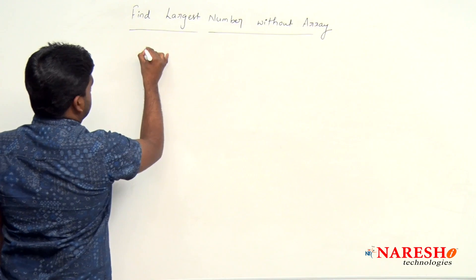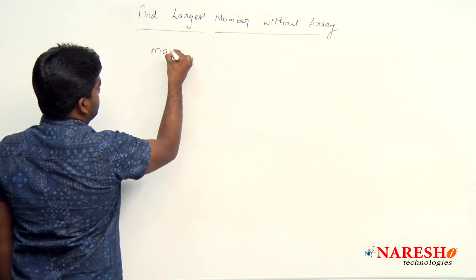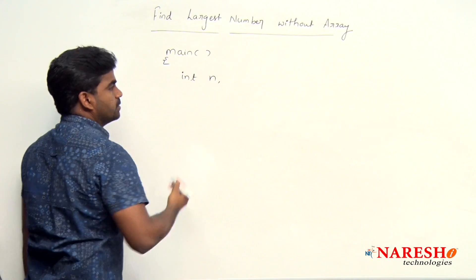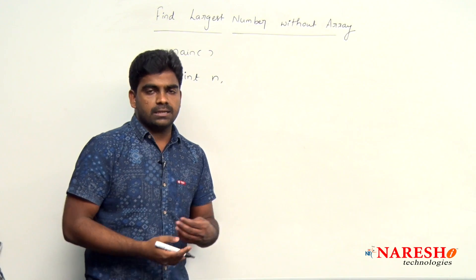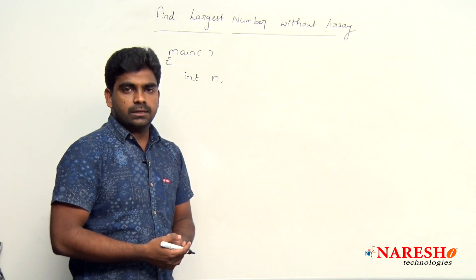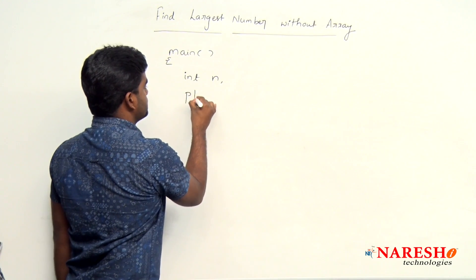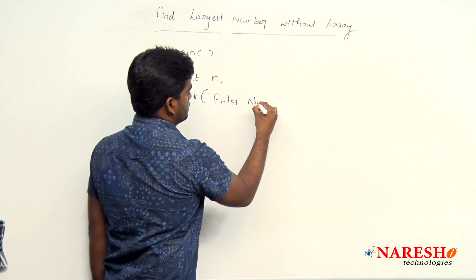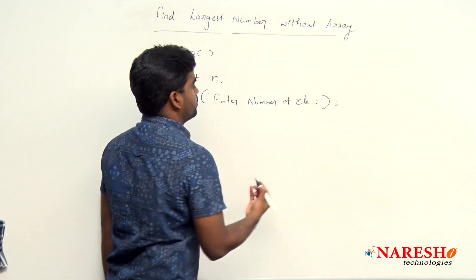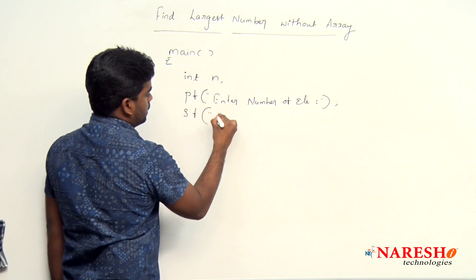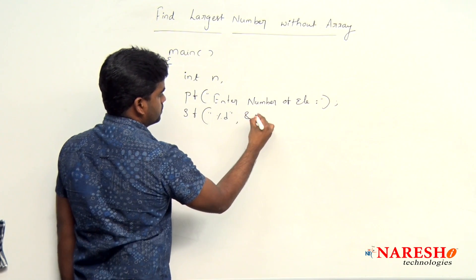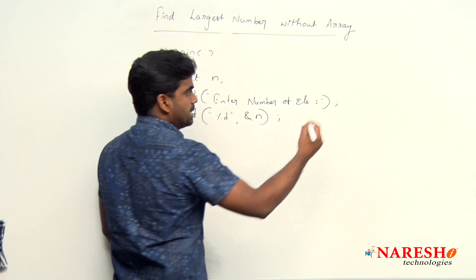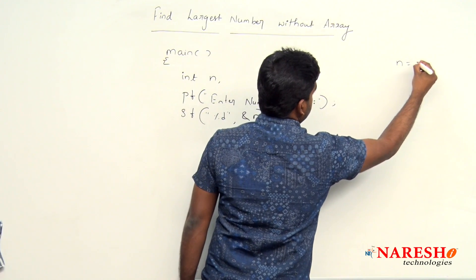First, execution starts with the main function. We are declaring one variable n, because I am going to ask how many elements you want to enter. Using printf and scanf, we are reading enter number of elements into n. Suppose n value is 5, just consider for example n equal to 5.